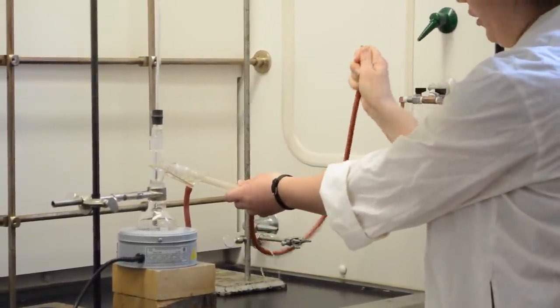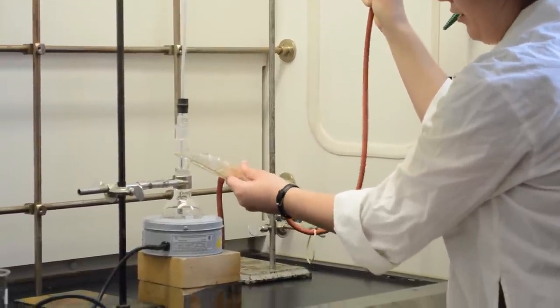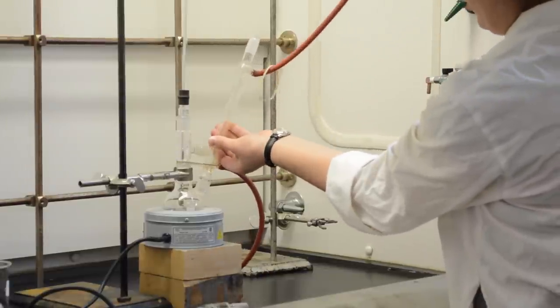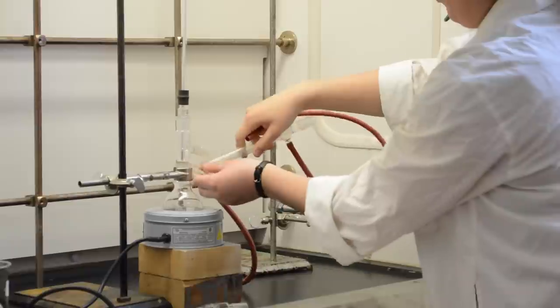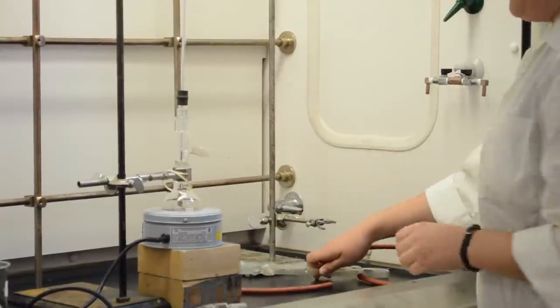First, detach the hose from the cold water. Then gently pull this off and invert the condenser so that all the water drains down the sink. Once that's done, remove the hose and place the condenser aside.